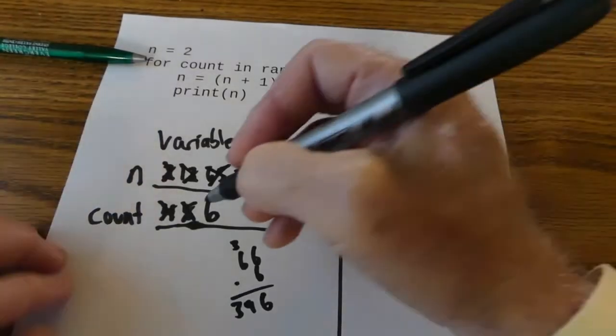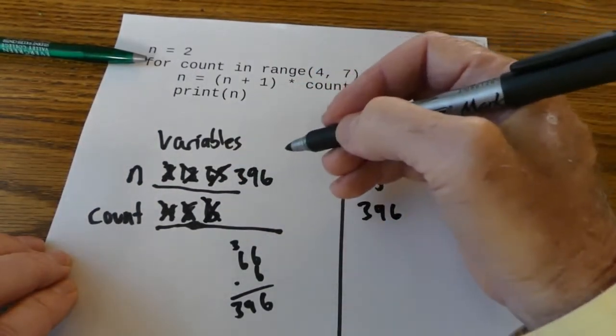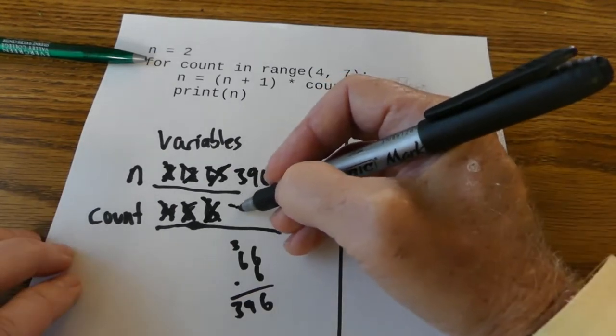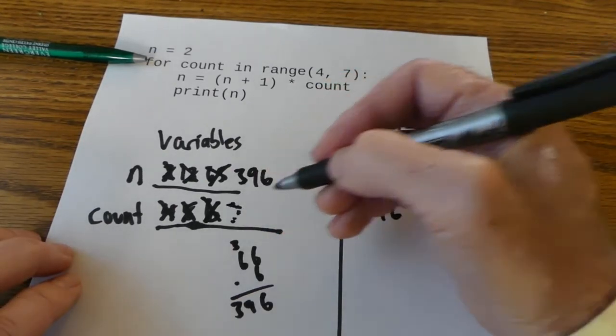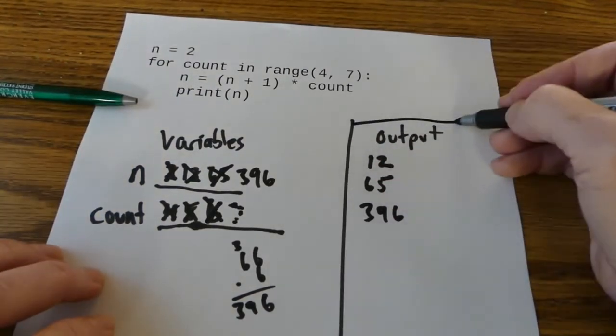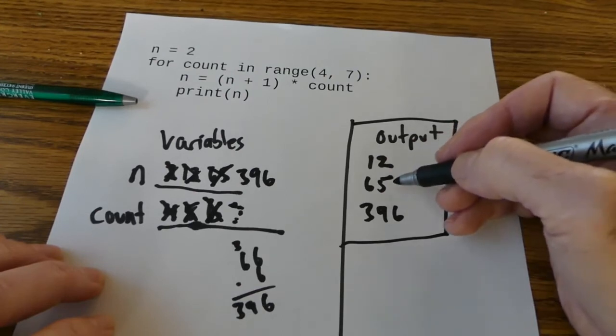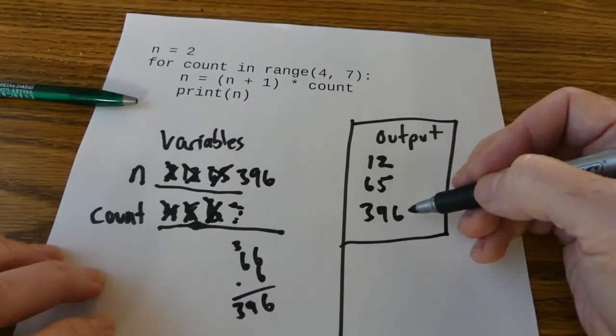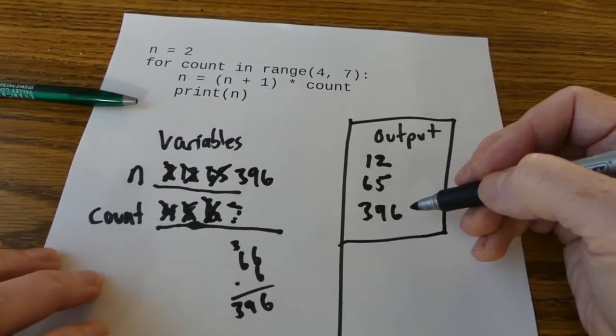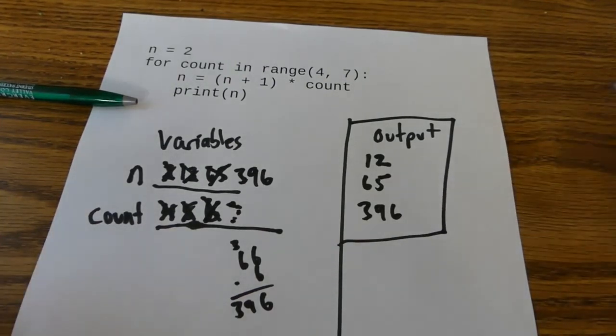I come back up here and the count is out of the range because I go up to but not including the 7. And so I'm out of the loop. I'm out of the program. And this is what I write down as my output for the program. 12, 65, 396. And that's how you solve problems like what's the output of this program when you see it on the midterm.